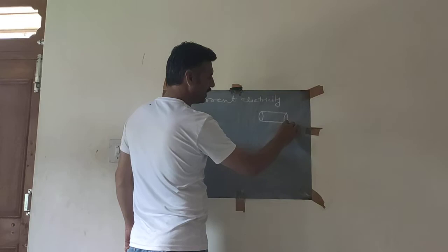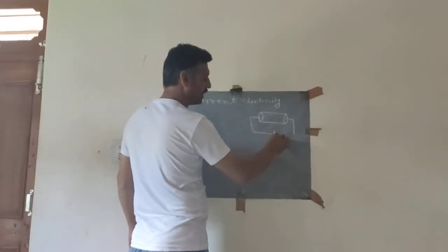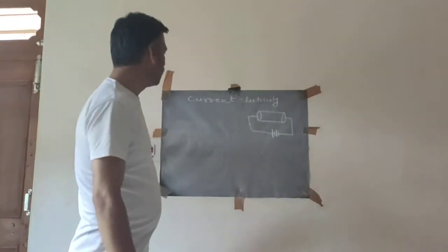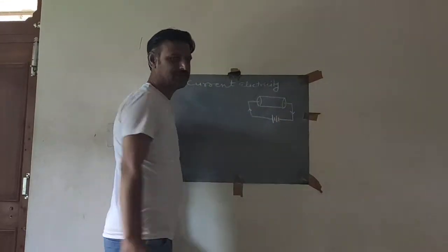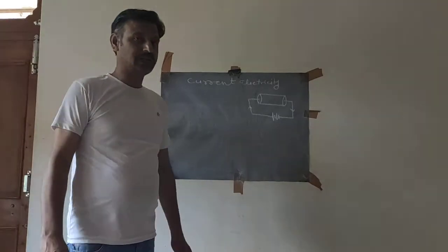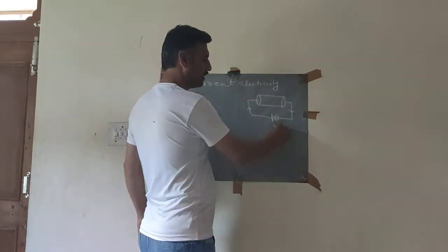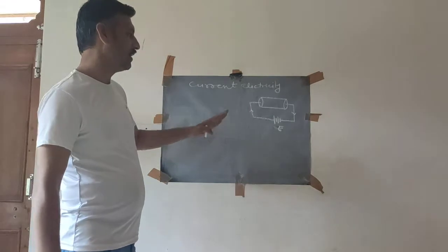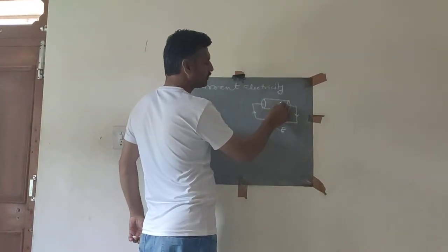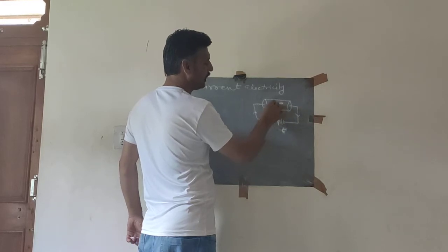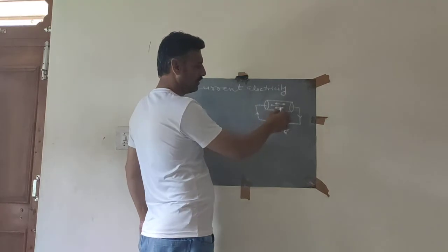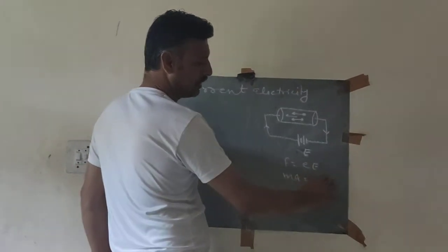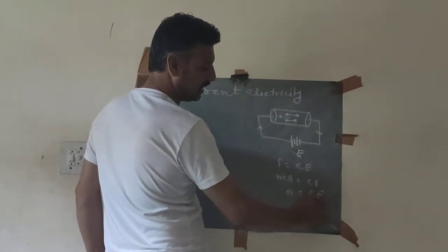The electrons in a conductor are always in motion, but the motion is random. Electrons are randomly oriented in all directions so that the vector sum of their velocity is zero, therefore there is no current unless an electric field or potential difference is applied. When potential difference is applied, electrons experience force F = eE and acceleration a = eE/m.